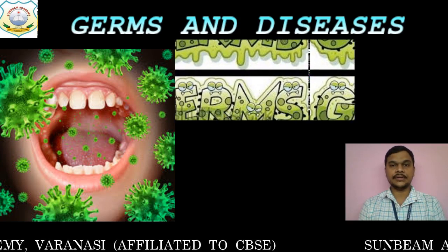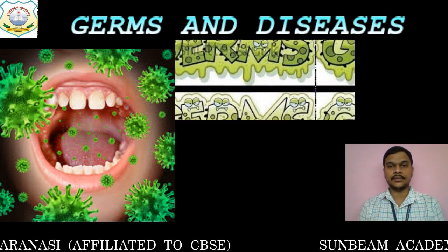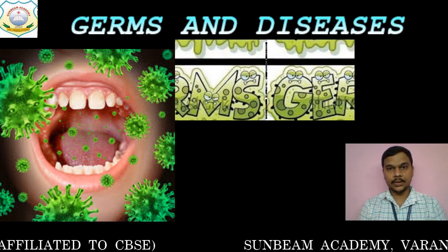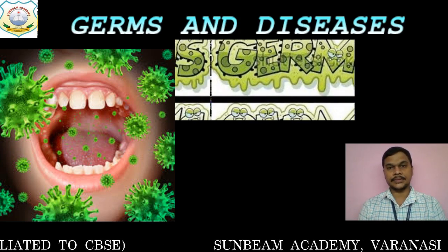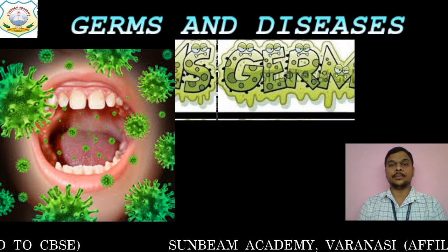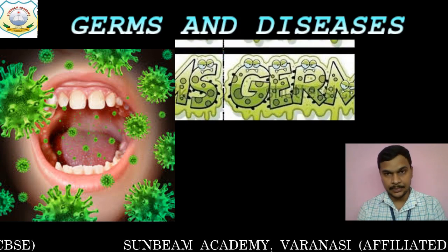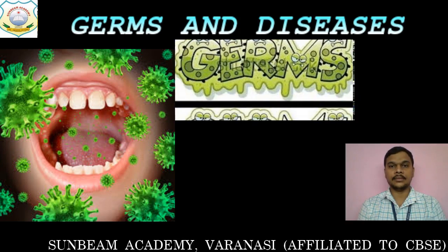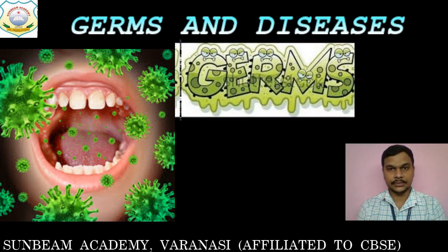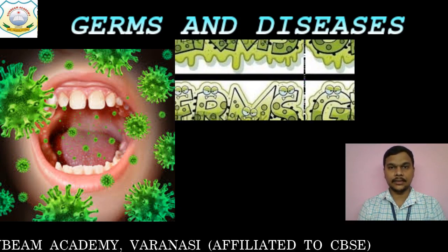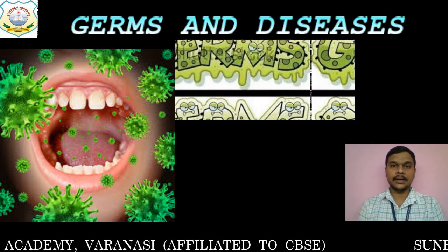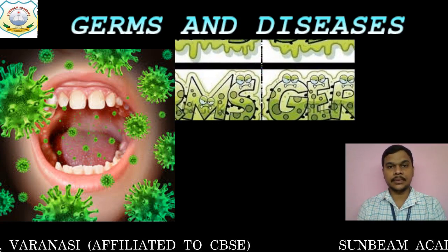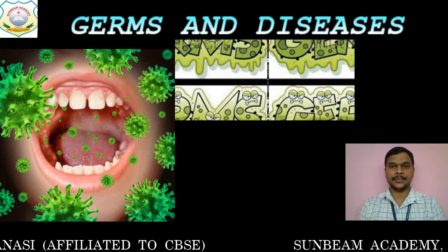Next, we studied how the transmission of diseases occurs from these microbes. The very first mode was contaminated food and water. Second was through air. Third was by direct contact with a sick person. And the last was when we are bitten by insects such as mosquitoes — whether female Anopheles or Aedes — they are responsible for causing various kinds of diseases.